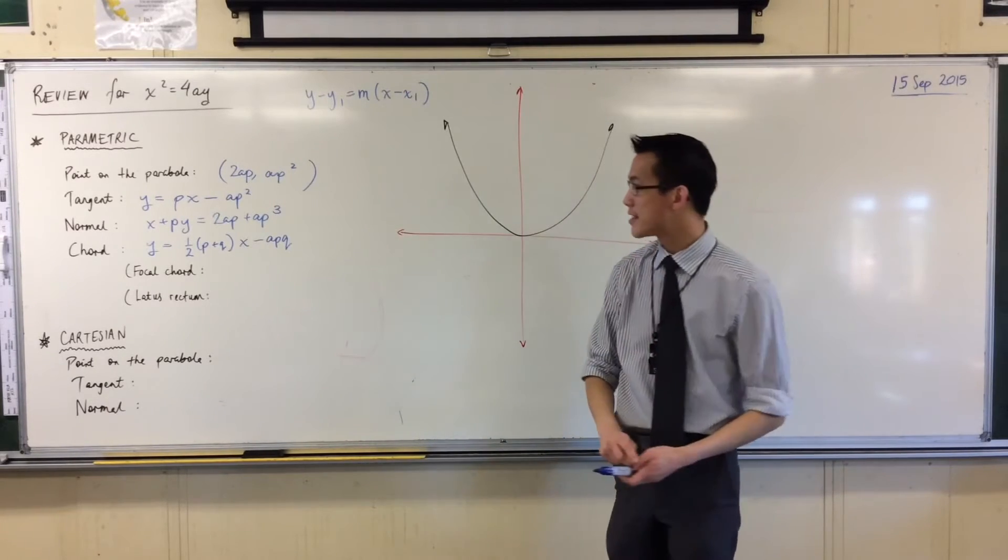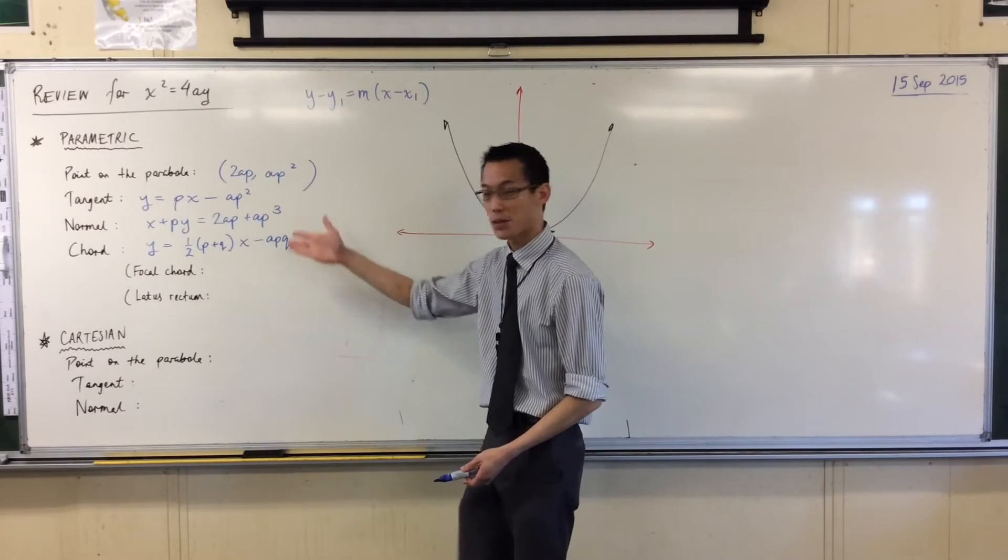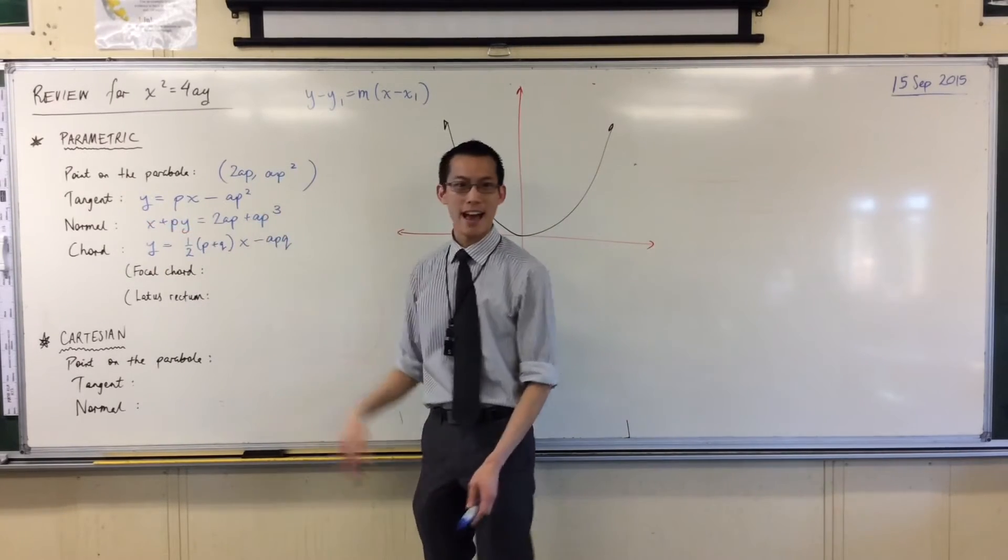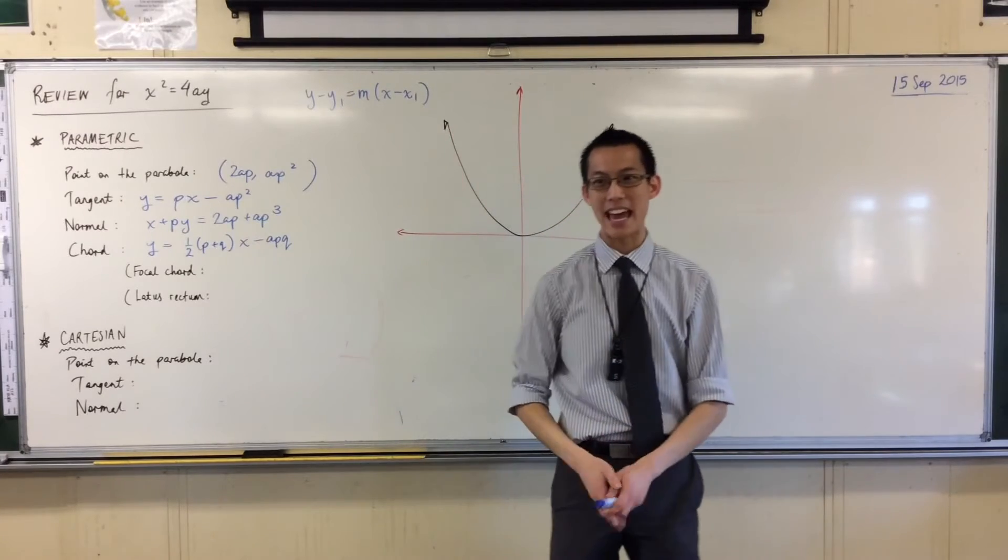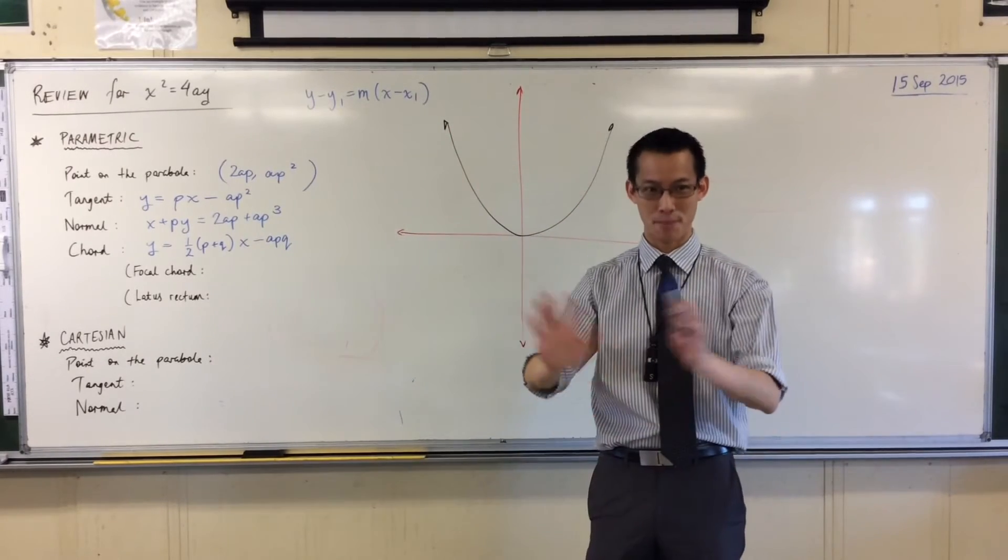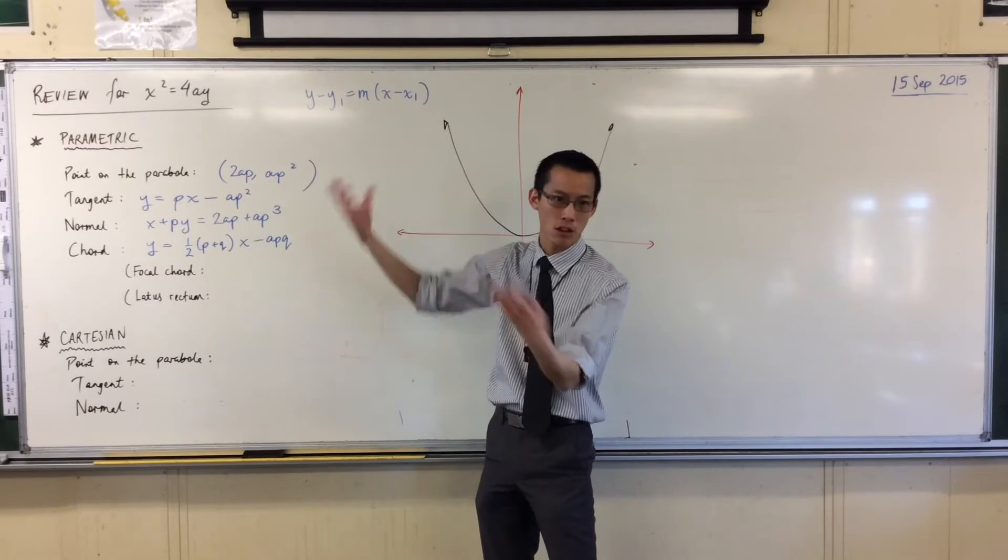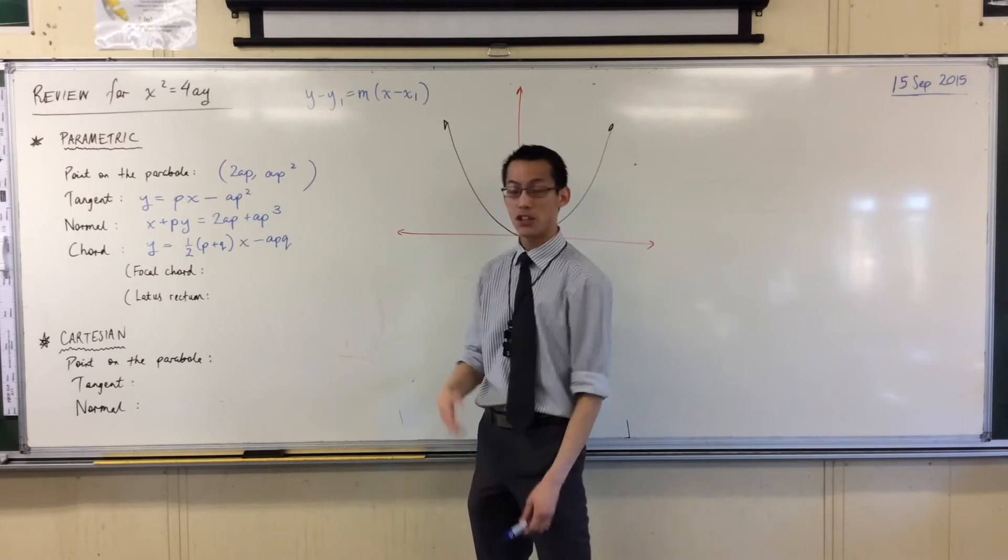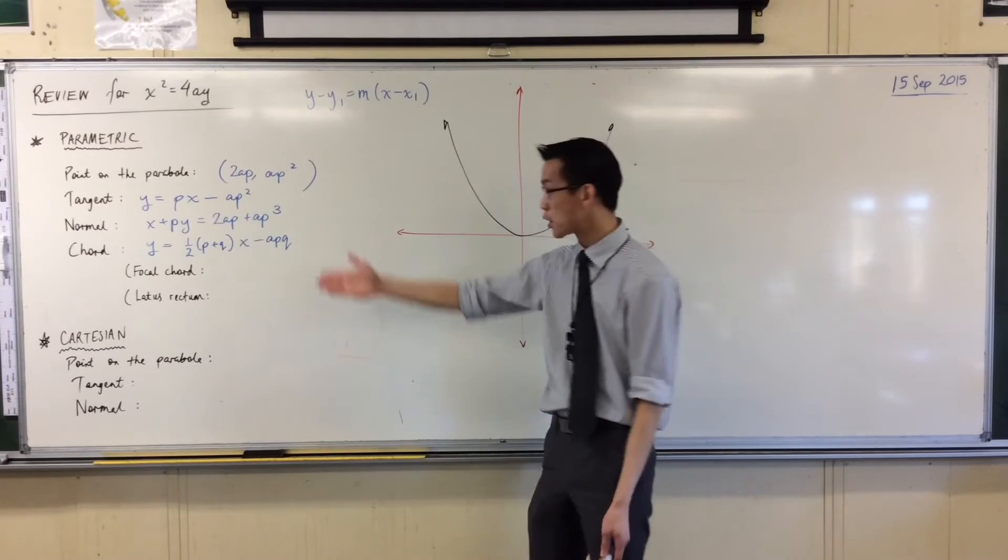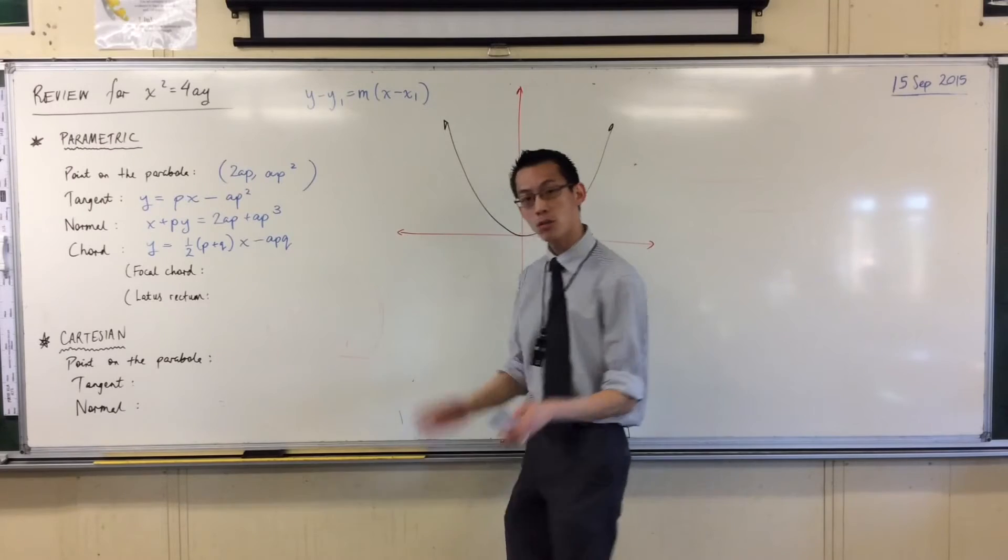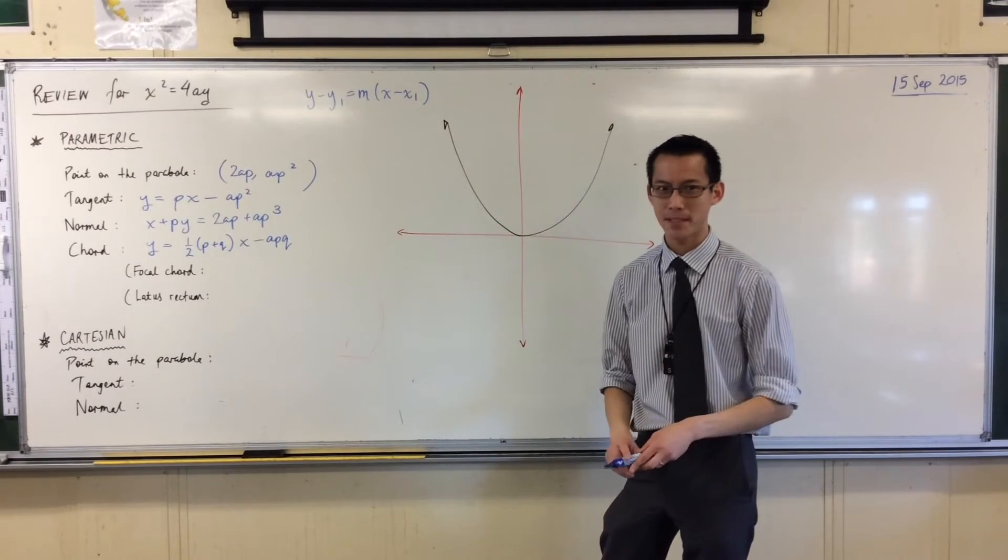Option two is they will actually, in the question, they will say, the equation of a normal is x plus py equals da da da, and in big, bold, italic letters, they'll say, do not prove this, do not prove it. And then they'll be expecting you, what they're assessing, therefore, is can you use it in the context of this question, and we don't want students to get caught up in proving it wrong, and then I can't do the rest of the question, and I've lost four marks automatically. So you'll see one of those, and it'll make it pretty clear.